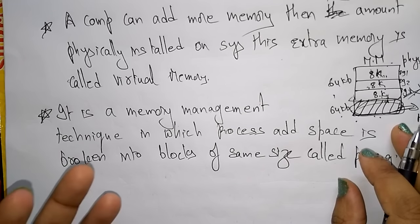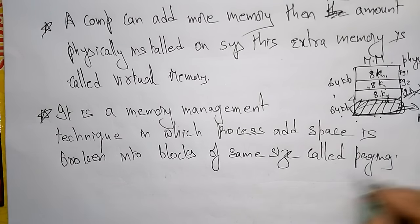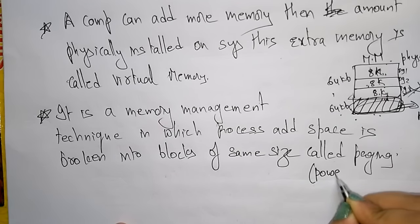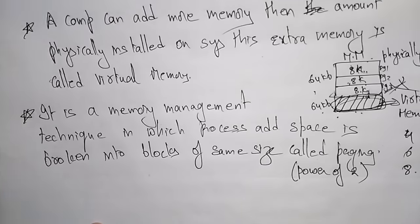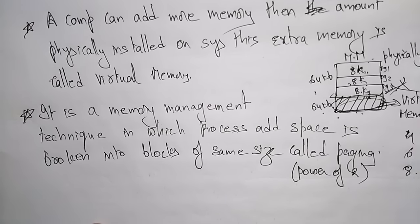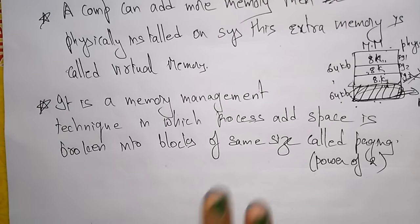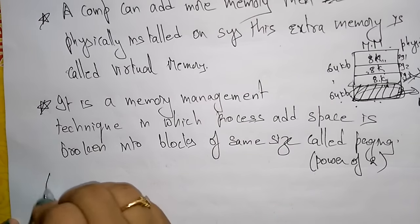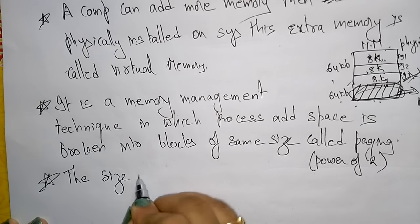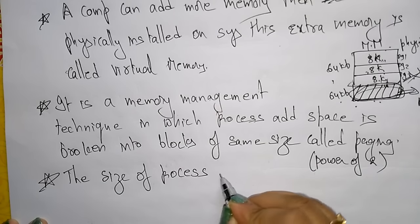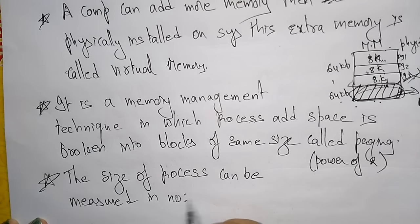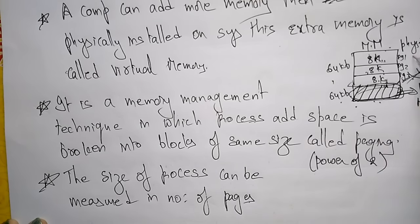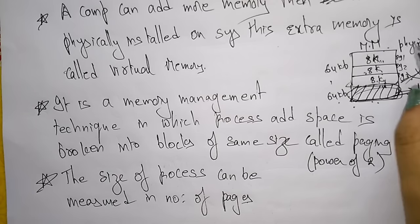The page size is always a power of 2 — either 2, 4, 8, and so on. The size of a process is measured in the number of pages. For example, if there are 3 pages, the size of the process is 3 pages.